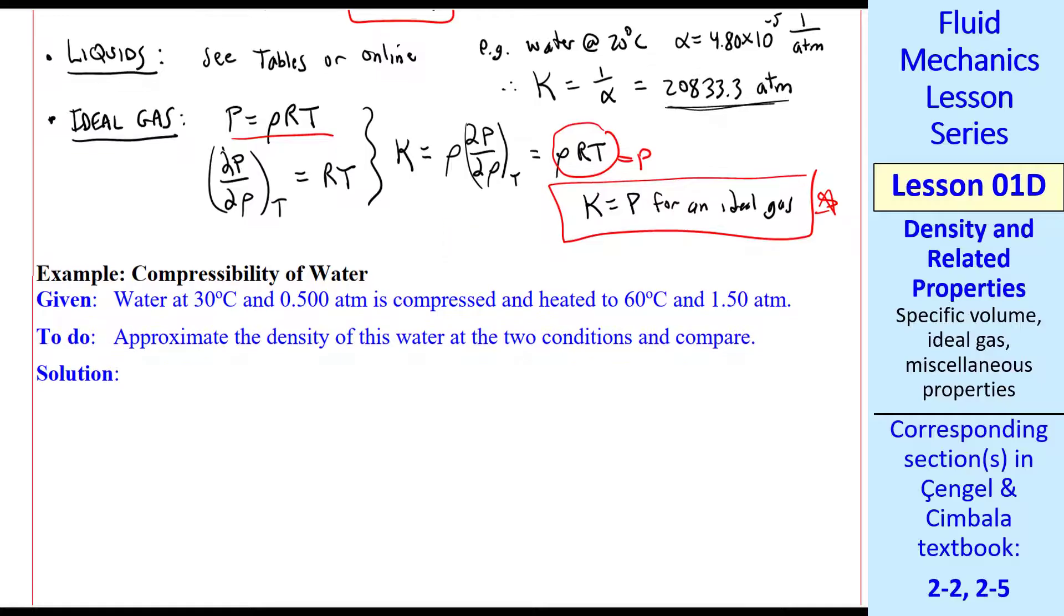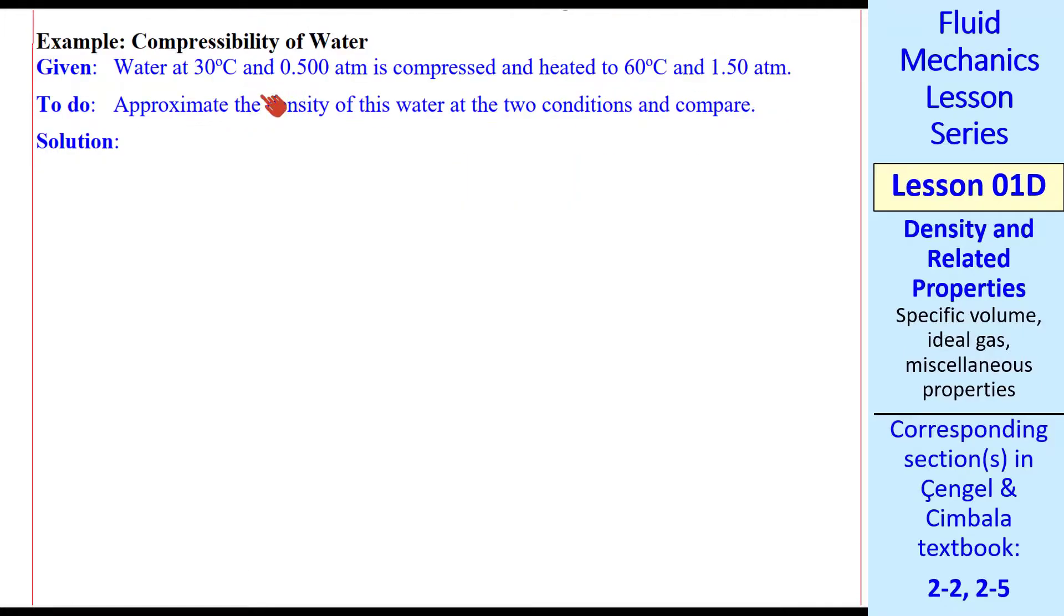Now let's do an example problem. The compressibility of water. We're going to combine both a compression and a heating. It's compressed from 0.5 atmospheres to 1.5 atmospheres and heated from 30 degrees C to 60 degrees C. We can call these state 1 and state 2.